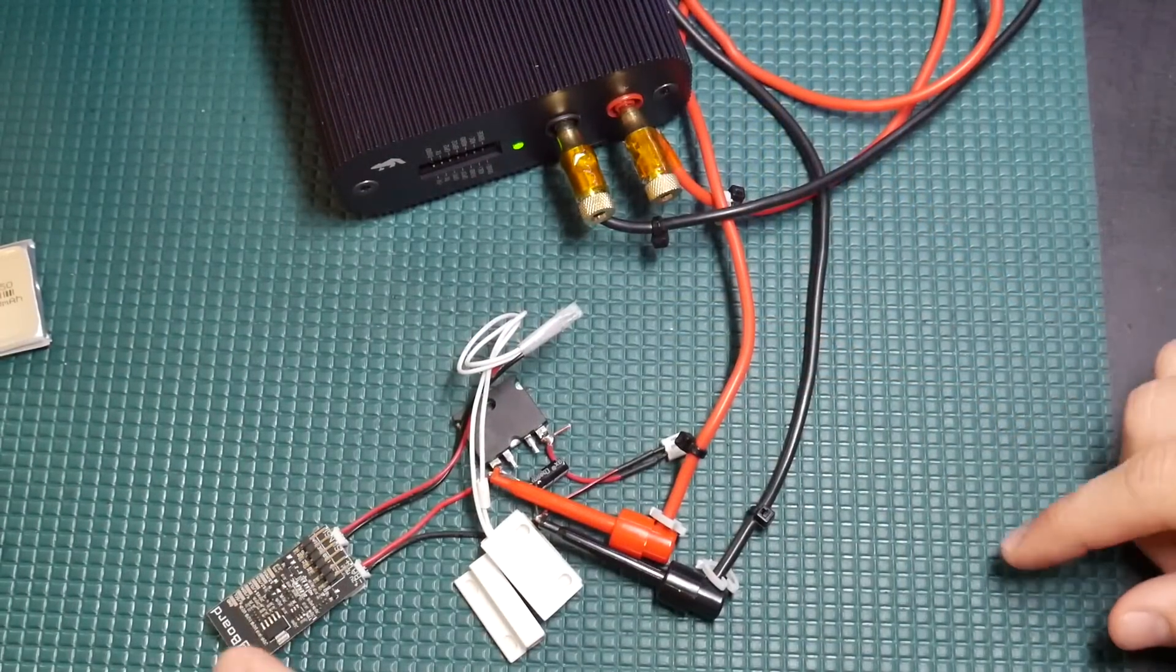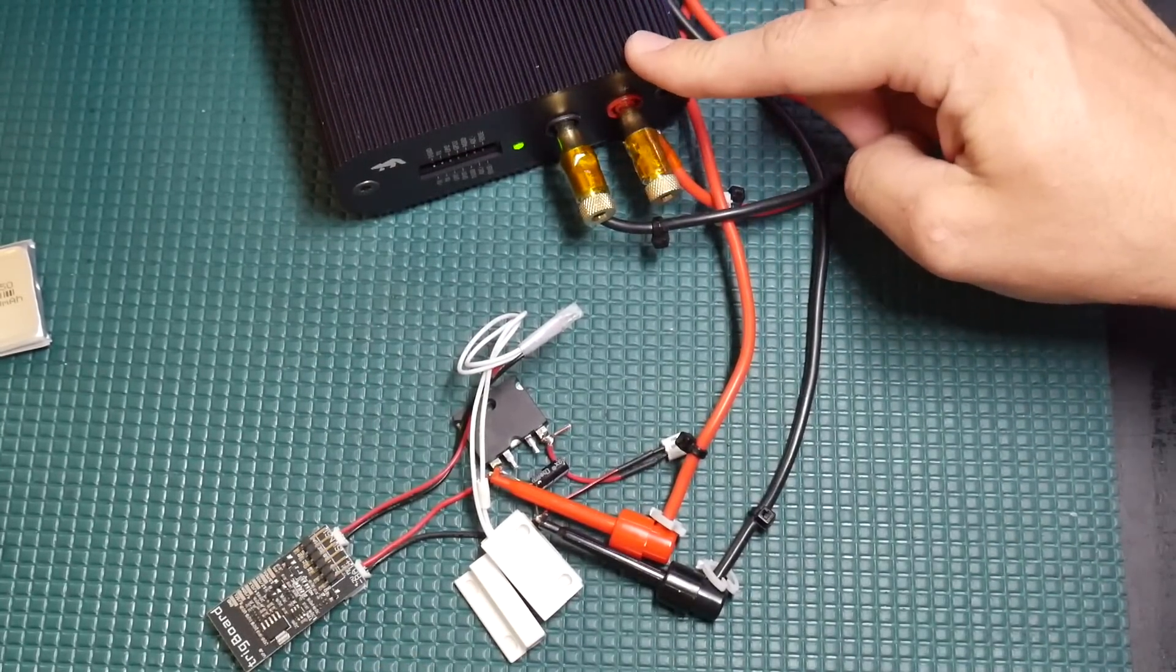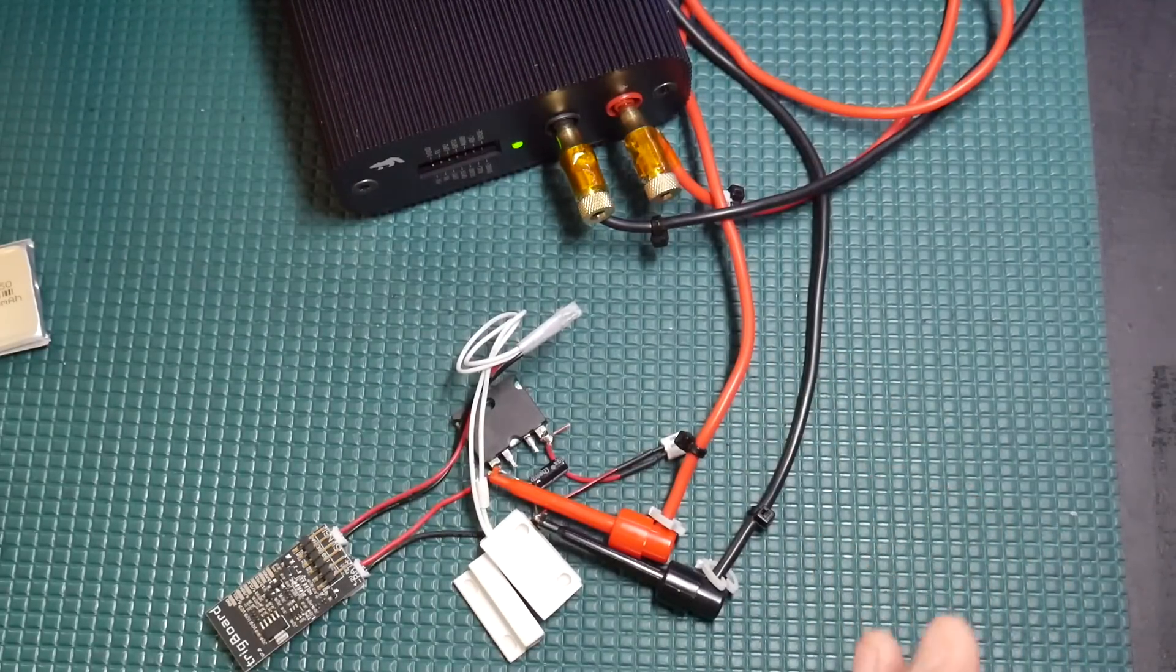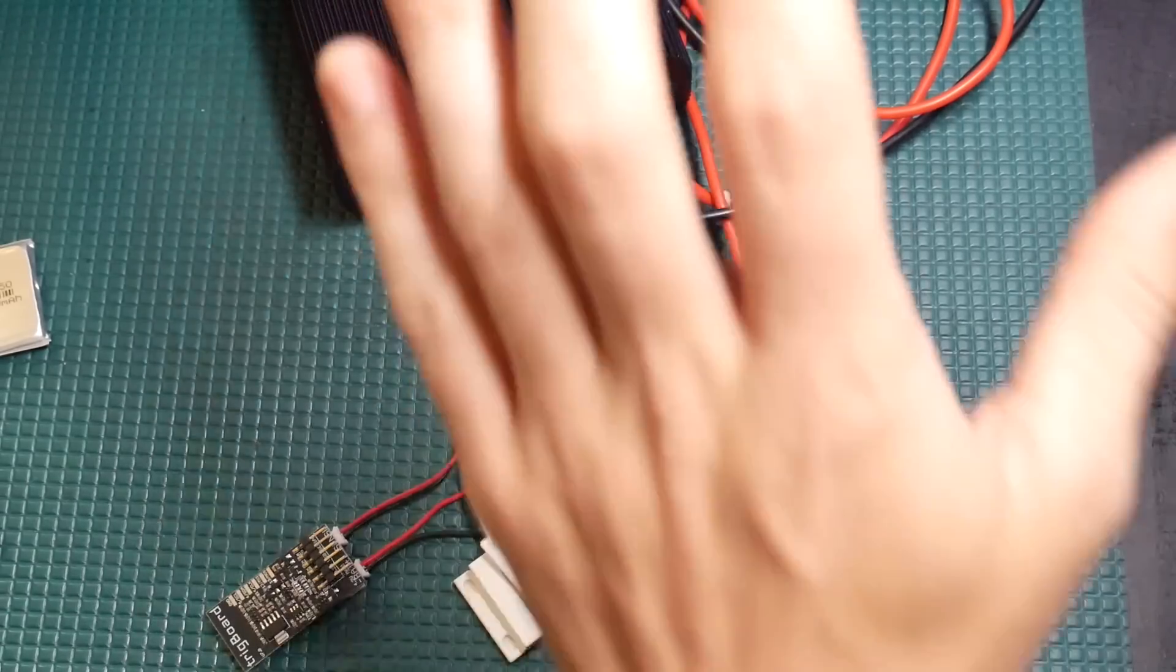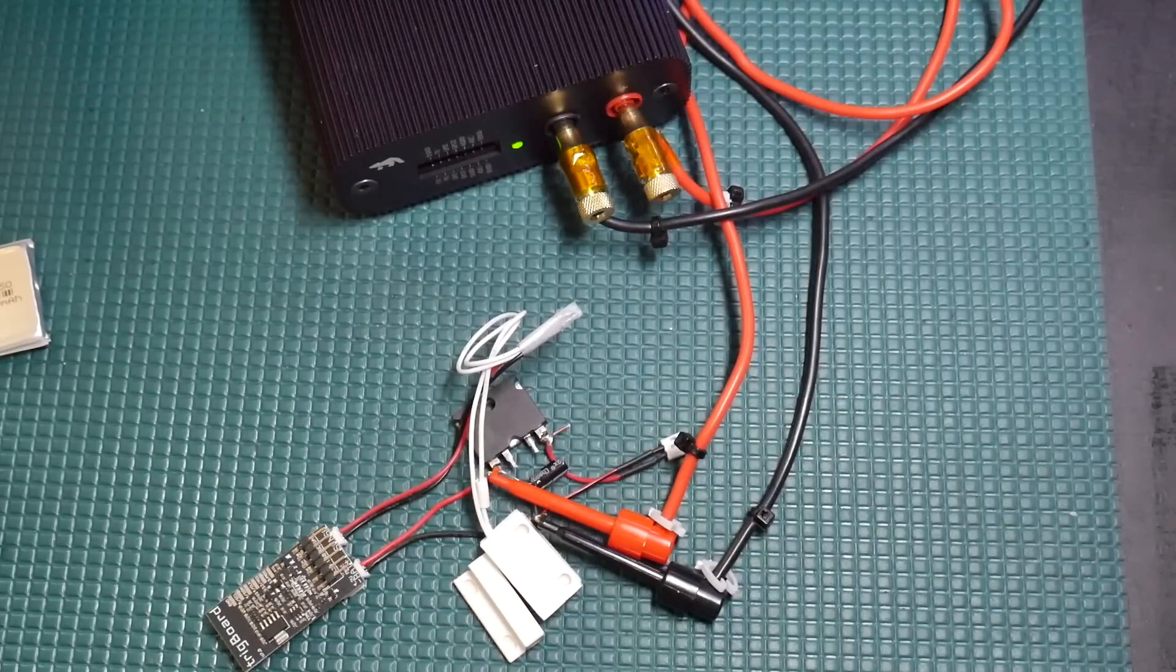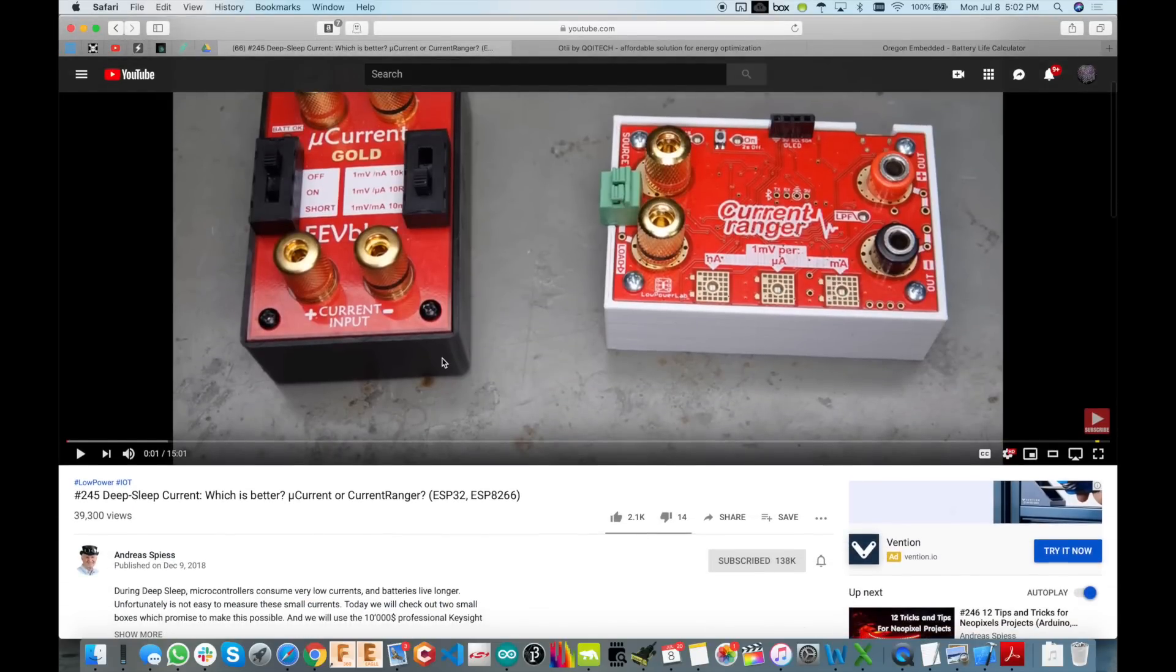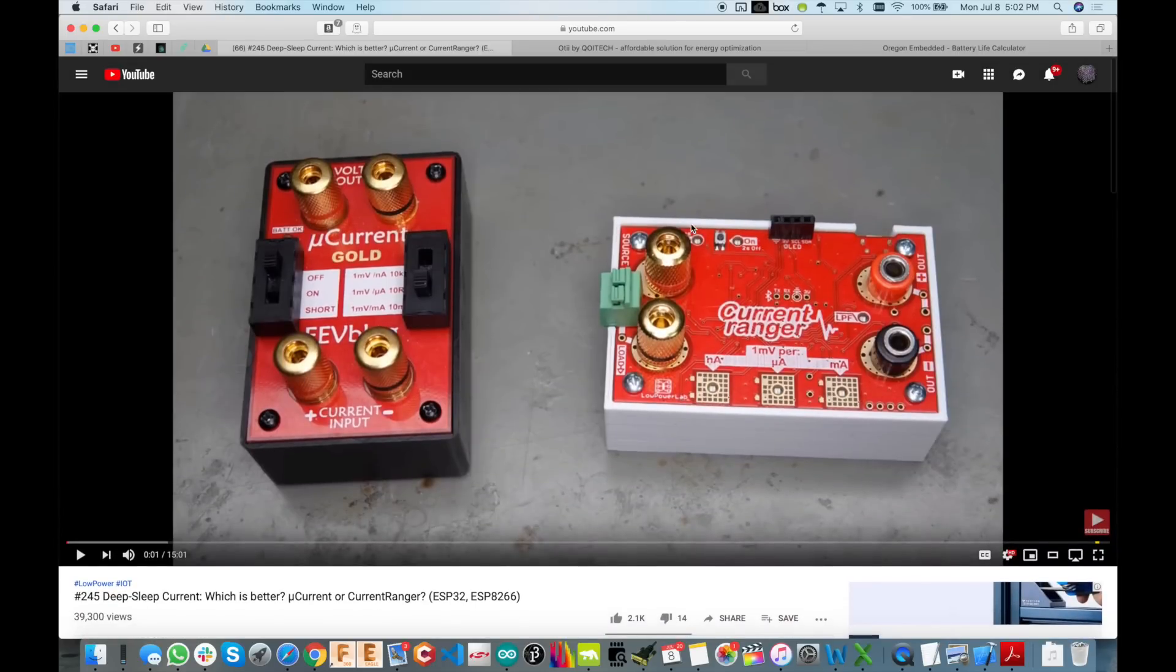The first thing we're going to do is measure the average current draw of the Trigboard. To do this I'm using a device called the OT Arc. I'm not sponsored by them, they didn't send this to me for free. I just happen to work on so many low power battery designs that having this on my bench really makes that a whole lot easier. Of course there's a million other ways of measuring your average current draw.